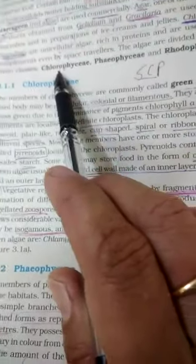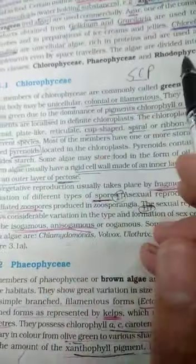Now we are here starting with the classification of class Thallophyta. It can be classified as Chlorophyceae, Phaeophyceae, and Rhodophyceae.